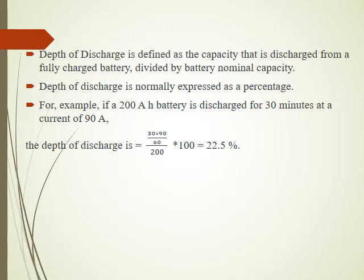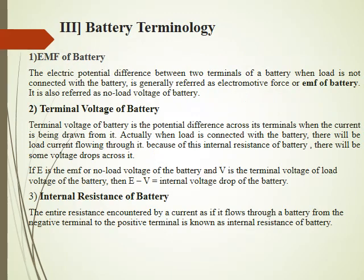To calculate depth of discharge, let us take an example: if a 200 ampere hour battery is discharged for 30 minutes at a current of 90 amperes, then the depth of discharge is defined as the capacity discharged from a fully charged battery divided by the battery nominal capacity. So it will be 90 amperes × (30/60) hours, divided by 200 ampere hours, multiplied by 100. The depth of discharge comes out to be 22.5%.